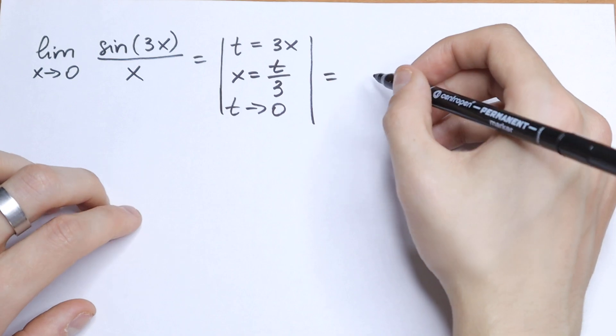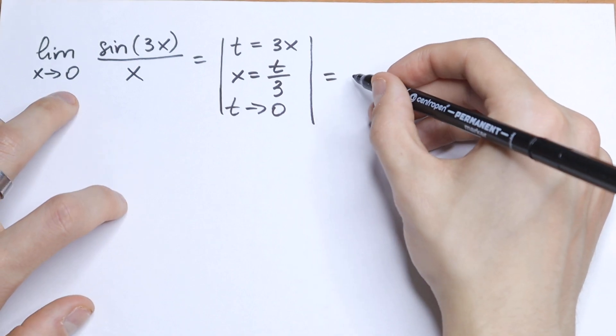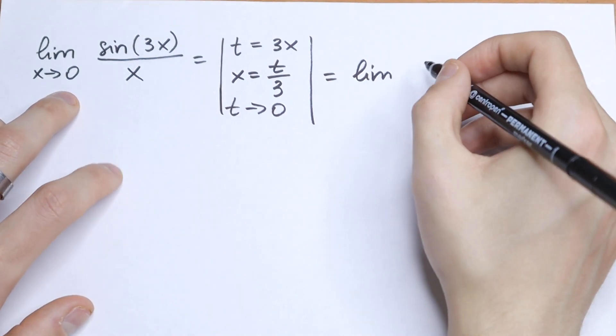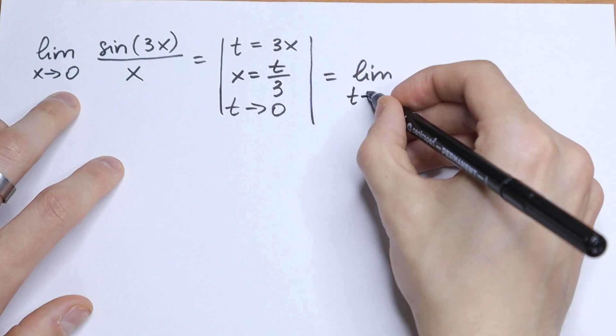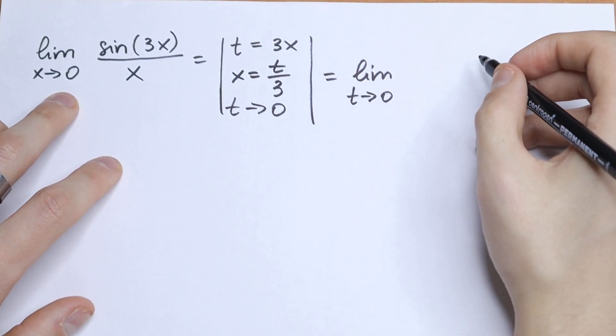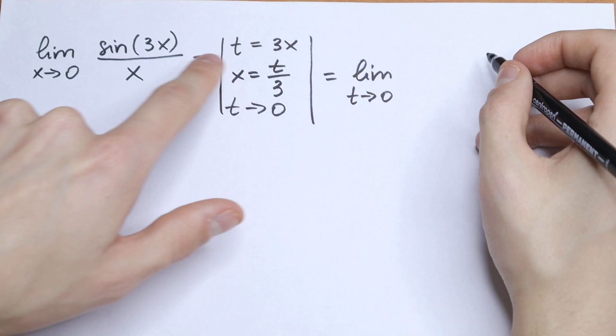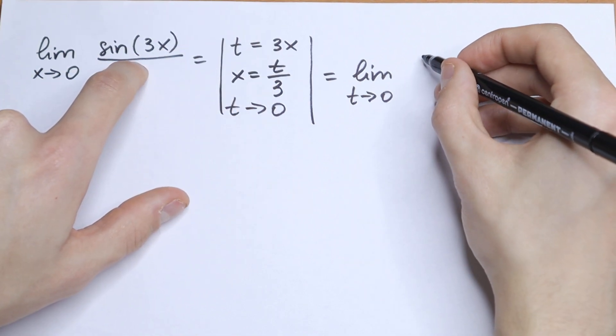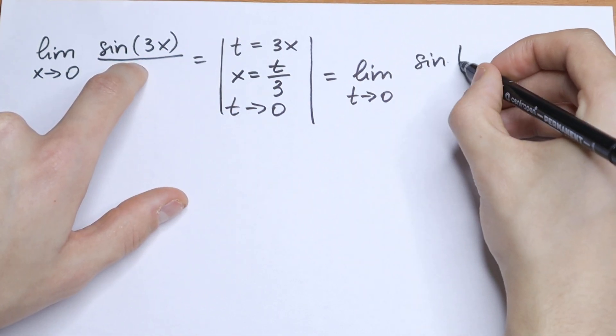Let's use this substitution. We will have that this limit will be equal to limit as t goes to 0. Instead of 3x we write t, so we will have sin t.